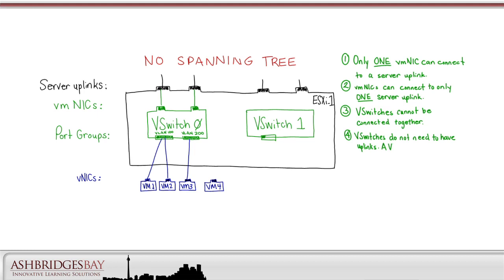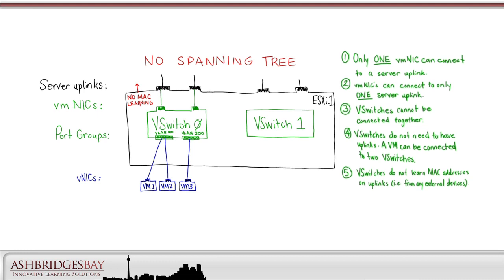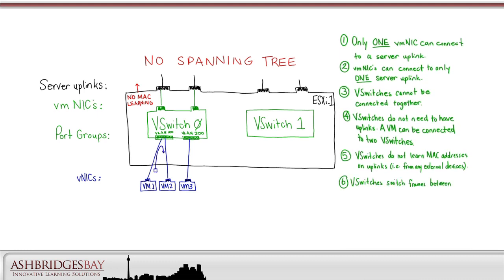vSwitches do not need to have uplinks. A VM can be connected to two vSwitches — this is allowed. For example, VM4 might be a firewall, and other VMs connected to vSwitch1 could be placed behind the firewall. We won't do this for UC on UCS, but it's good to know. vSwitches do not learn MAC addresses on uplinks — they will learn the MAC addresses for the VMs attached to them, but will not learn MAC addresses for external devices. vSwitches switch frames between VMs in the same VLAN. While this is normally a good thing, network administrators sometimes want to put policies on switch ports in the same VLAN to control traffic. Unfortunately, we cannot do this in a VMware vSwitch. This is a motivation for deploying the Nexus 1000v, which we'll discuss in another whiteboard drawing.